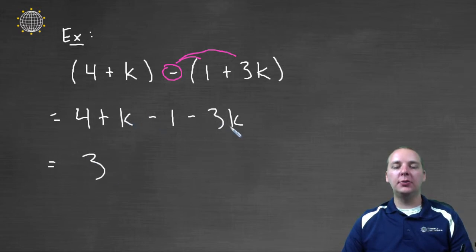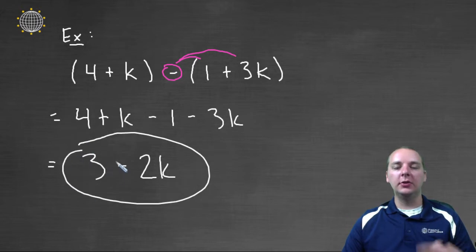And k minus three k, both of those are like terms. So that would yield minus two k. So this would be our final answer after distributing the negative and combining like terms.